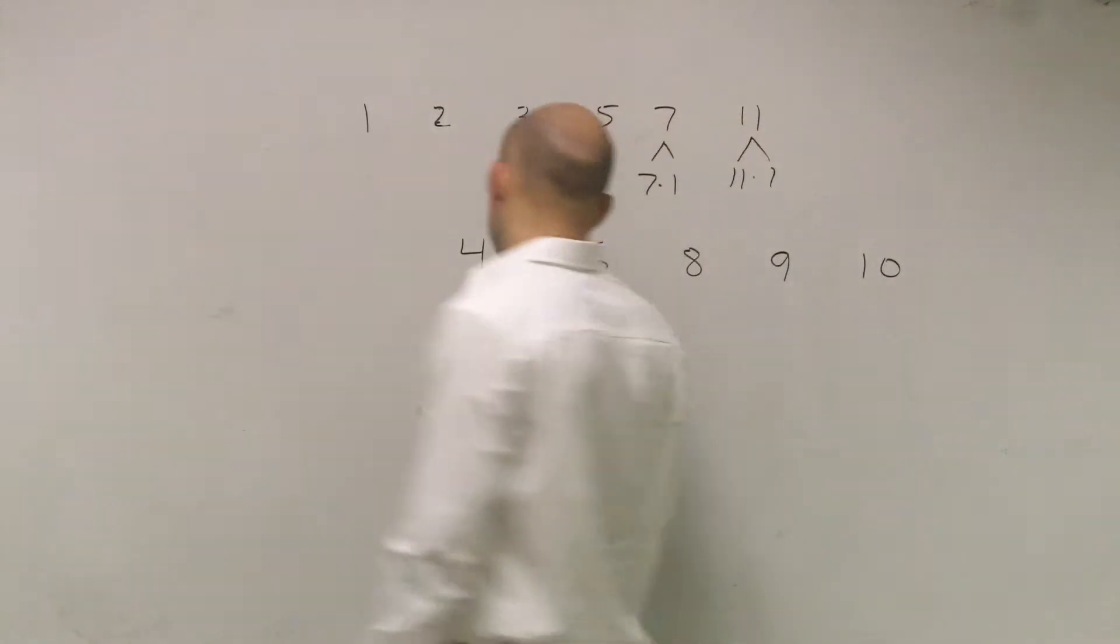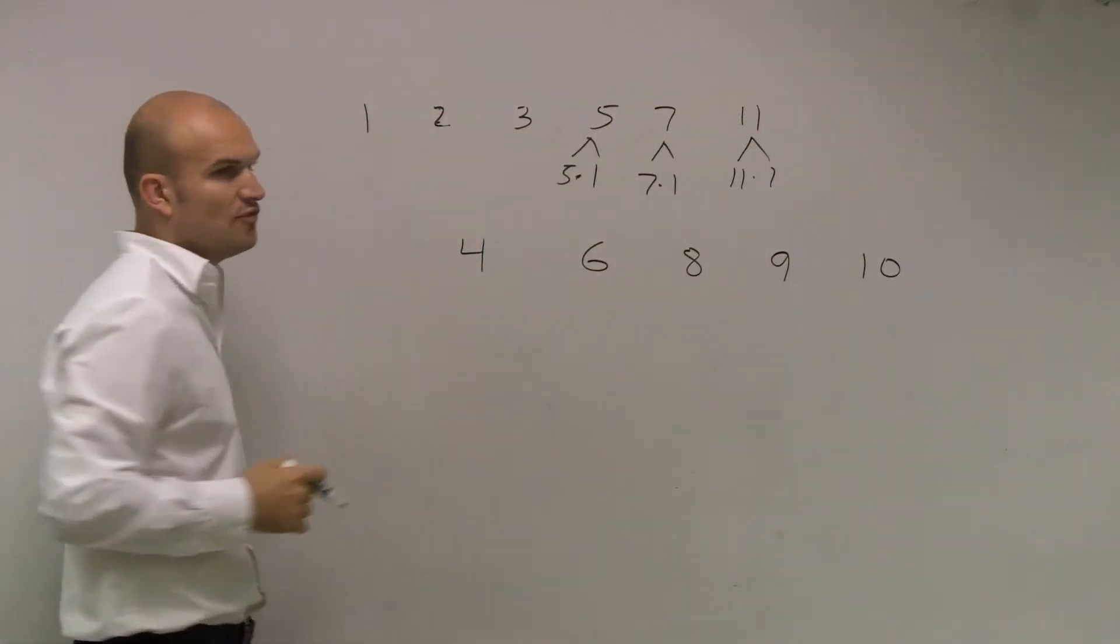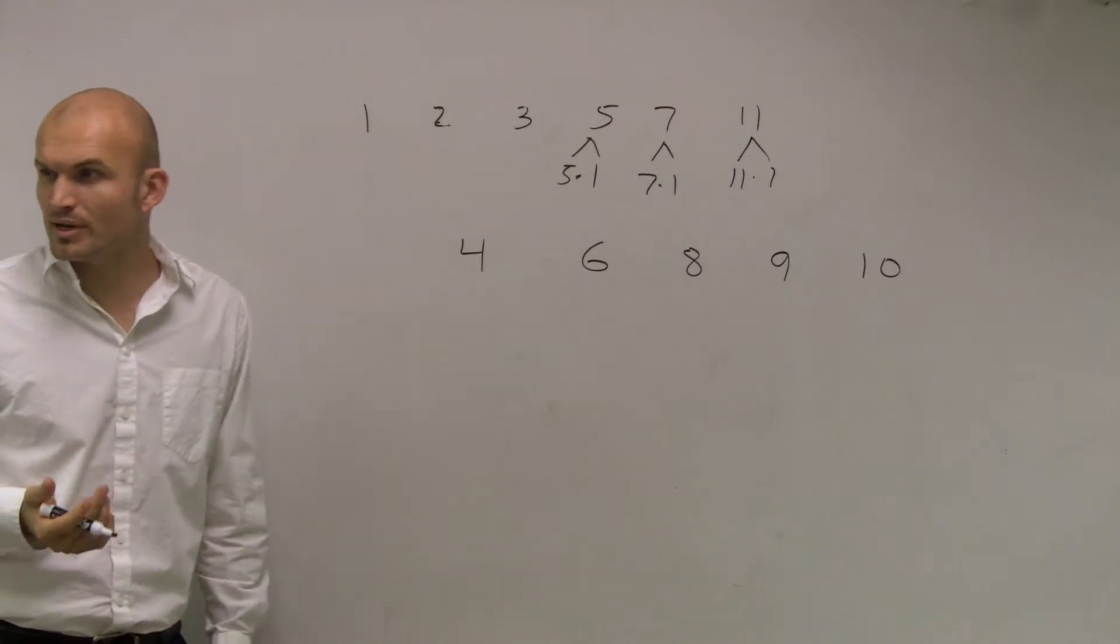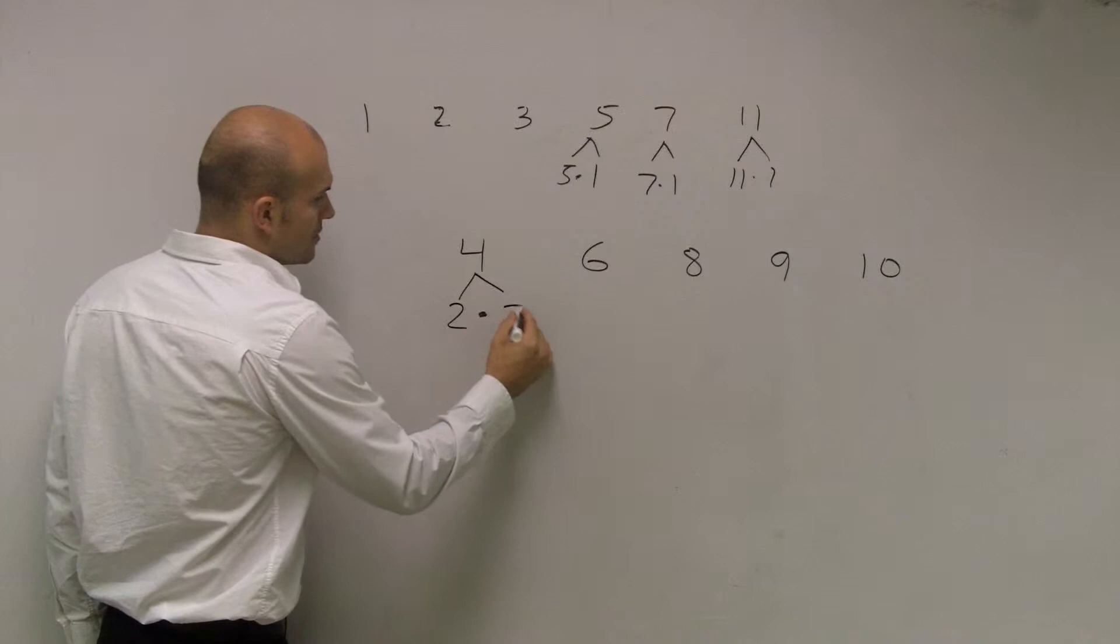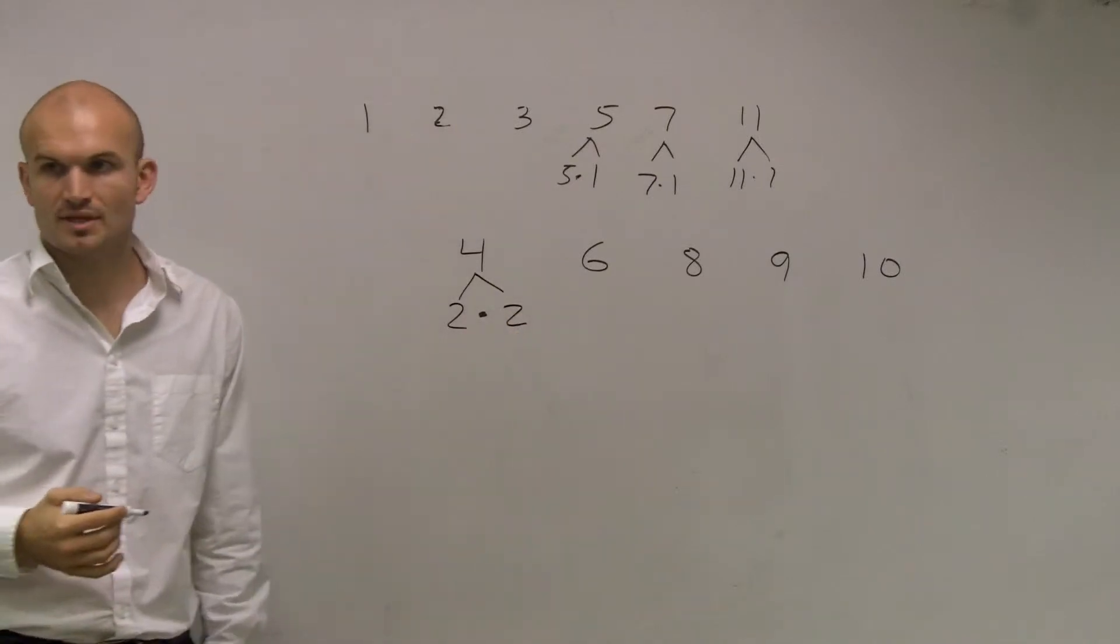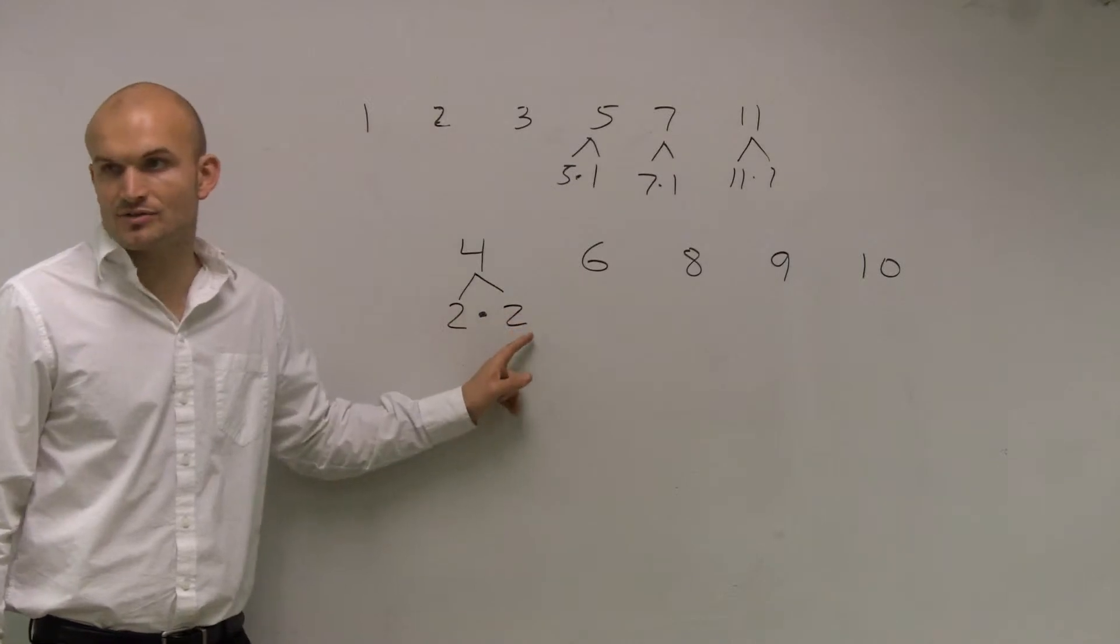For example, we know we can do 4 times 1, right? But is 4 a prime number? No. So we can factor this down to 2 times 2. Now this is a product of the prime factors of 4.